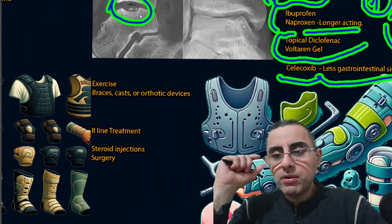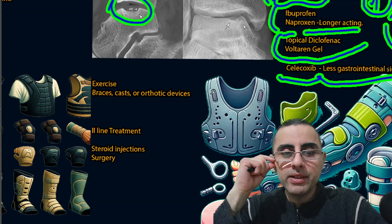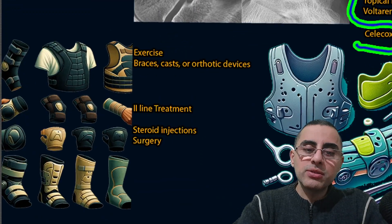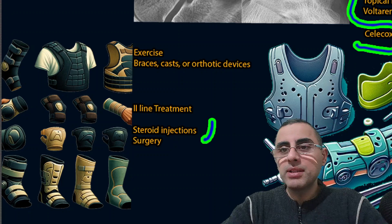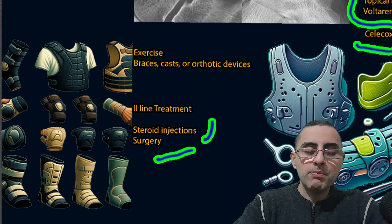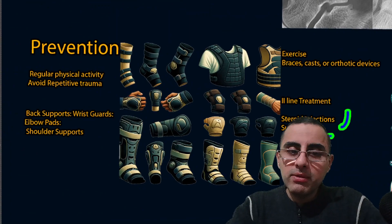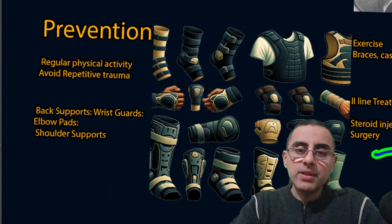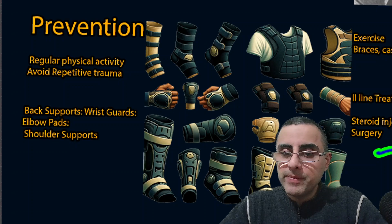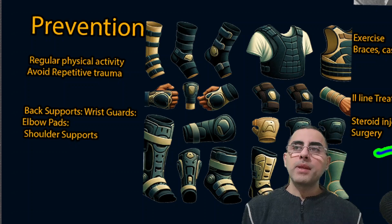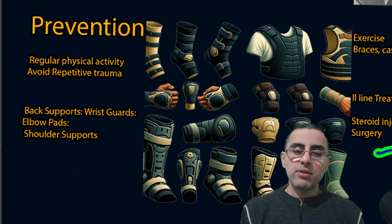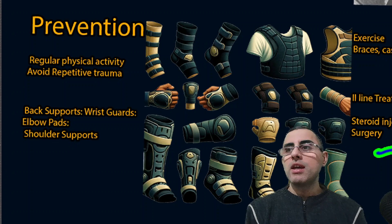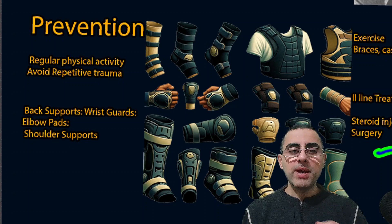Exercise is also important, as are braces, casts, and orthotic devices if required. Second-line treatment is steroid injections if other treatments fail, and surgery is the last option. Prognosis is usually favorable — most people recover from osteochondrosis after some time without problems. However, if left untreated and repetitive traumas continue, osteochondrosis can last into adulthood and may cause permanent bone damage in some cases.